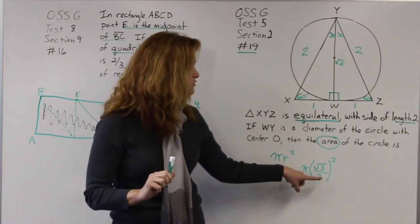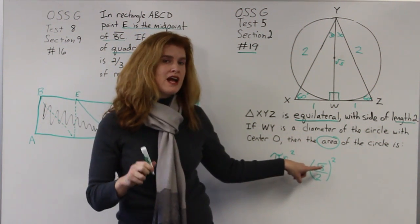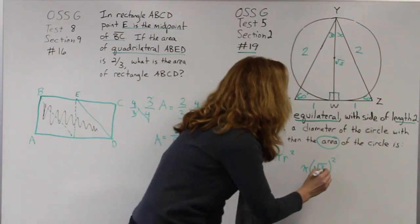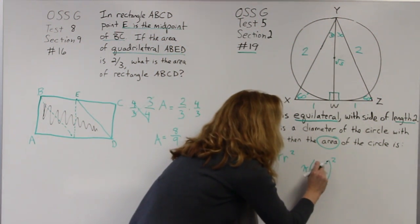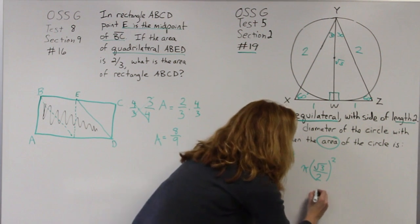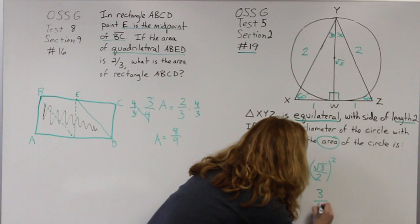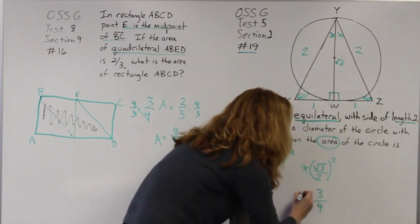Now remember, when you square, you have to square the numerator as well as the denominator. So don't forget that important piece. When I square this, I get root 3 times root 3 gives me 3, and 2 times 2 gives me 4, and I'm multiplying that by pi.